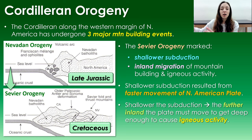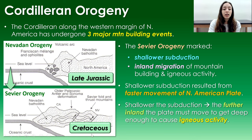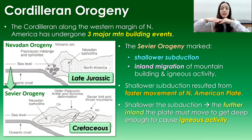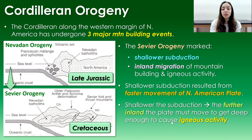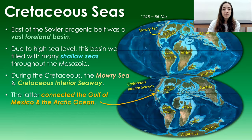During the Cretaceous, the Sevier Orogeny marked shallower subduction of the plate under North America, leading to an inland migration of all subduction-related activity: igneous activity, mountain building, folding, and thrusting. This shallower subduction angle was caused by faster movement of the North American plate toward the subducting plate. The shallower the subduction, the further inland the plate must travel before reaching mantle depths sufficient for melting and igneous activity.